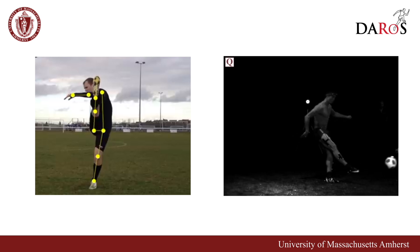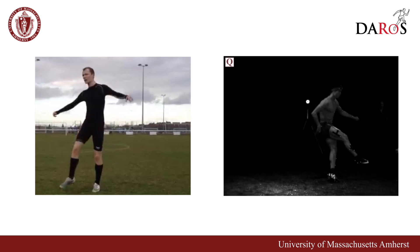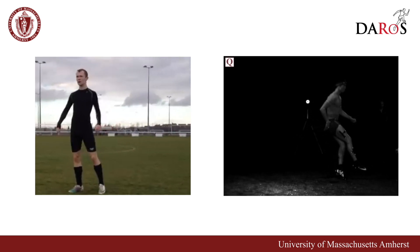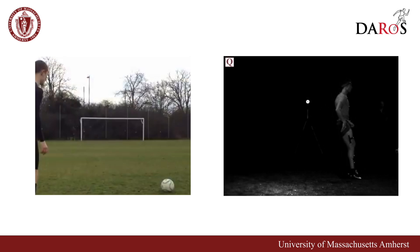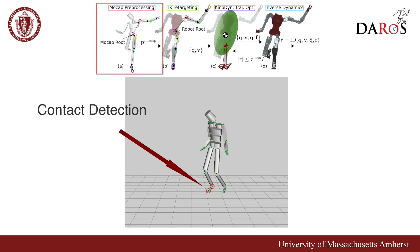Using this knowledge, we developed a motion planning framework for generating robot trajectories that are consistent with both the kinematics and dynamics of the robot. Our motion planning framework comprises four key stages.